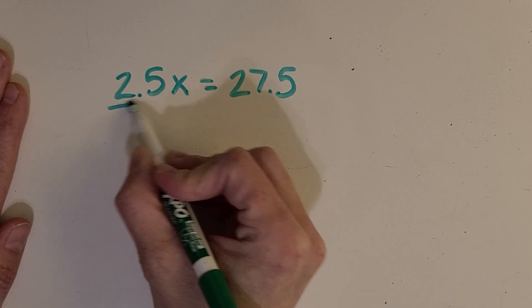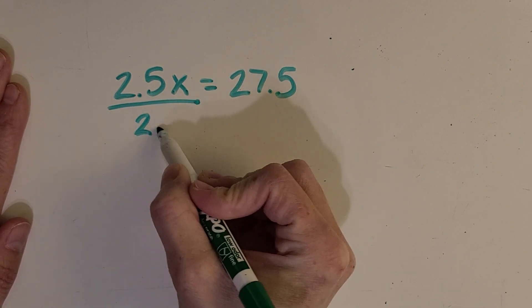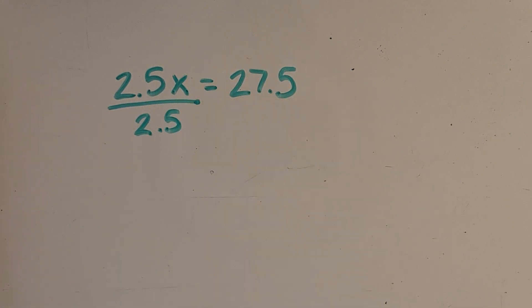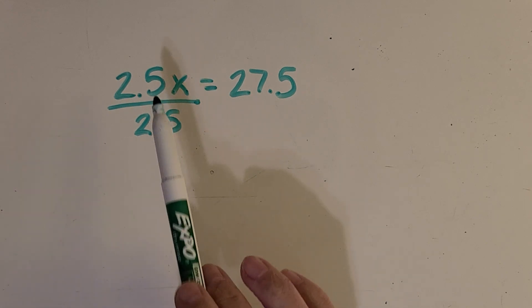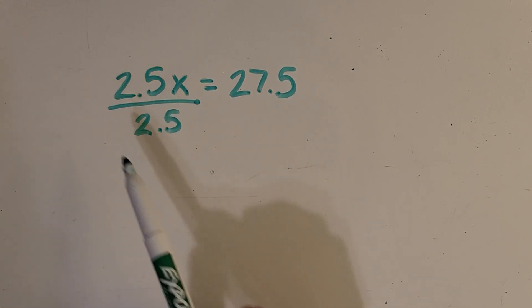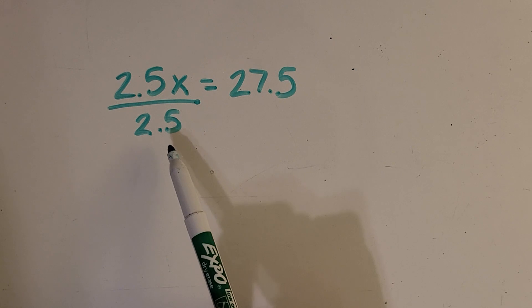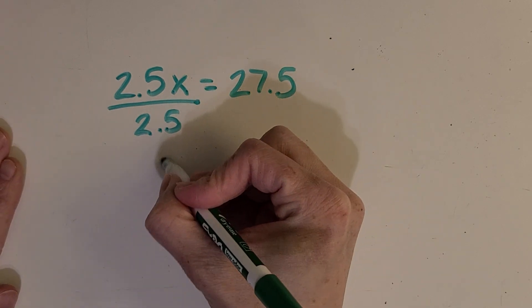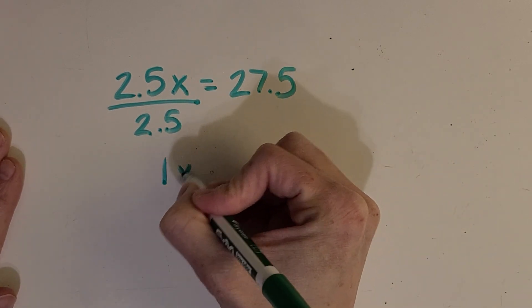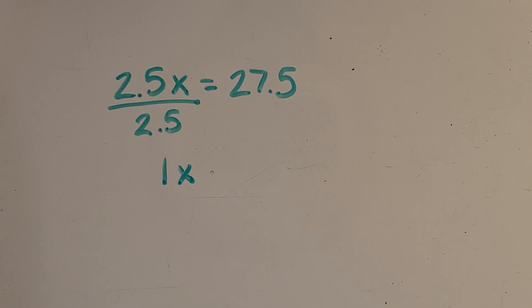Great, division. So if I divide by 2.5, then I know if I take a number divided by itself, that it equals 1.